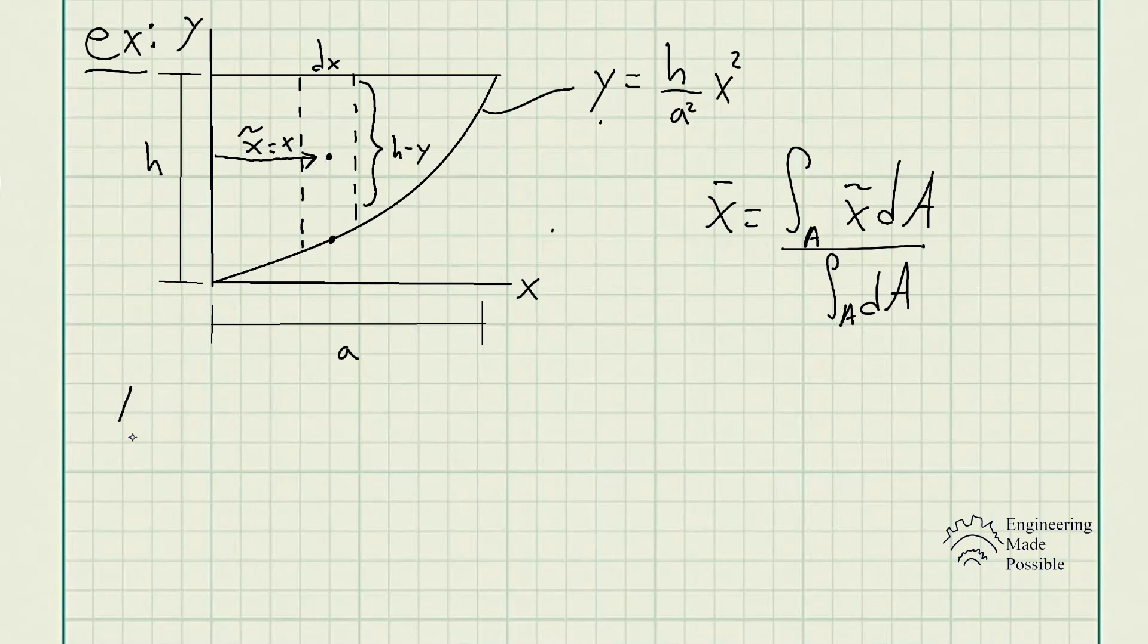Now the area of a rectangle is equal to length times width, so it's going to be h take away y times x. Now if you want to do the dA, the derivative of that area will be h take away y times dx. So this is actually your dA that you're going to be using to integrate to find that x-bar. So let's go ahead and actually use the formula now.